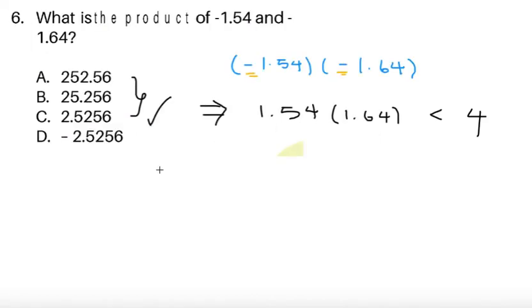Next, item 6. What is the product of negative 1.54 and negative 1.64? So, we're multiplying two negatives together, so we can just eliminate those two signs and then just deal with this. And, notice how 1.54 is less than 2, and then 1.64 is less than 2.